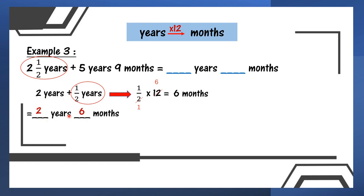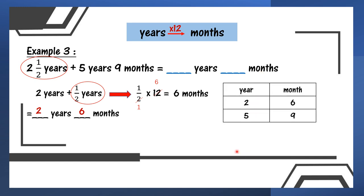Saya baru je tukar yang pertama — ini step 1. After that, we need to plus 5 years 9 months. Sudah tukar, baru kita tambah — sebab pattern dia dah sama: years and months. Bila ada years and months, we need to use a table like this. I fill in 2 years 6 months in the first row, plus 5 years 9 months. Then we start from months: 6 plus 9, we get 15. And 2 years plus 5 years, we get 7.